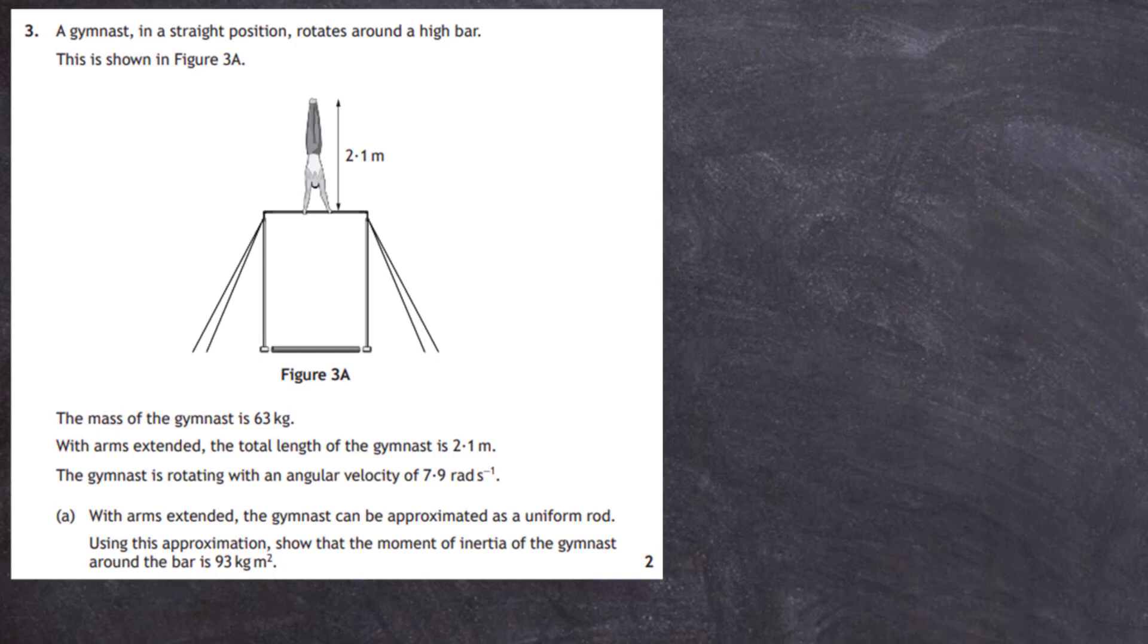Question 3 from the 2019 Advanced Higher Physics Examination from the SQA. A gymnast in a straight position rotates around a high bar and this is shown in figure 3A. The mass of the gymnast is 63 kilograms and with arms extended the total length of the gymnast is 2.1 meters.